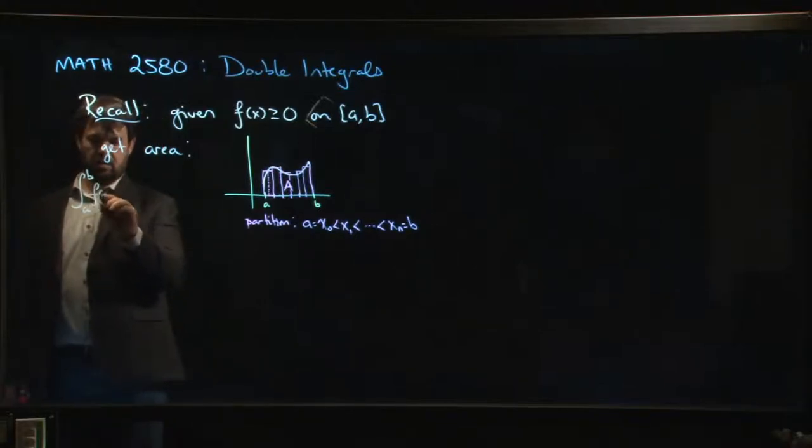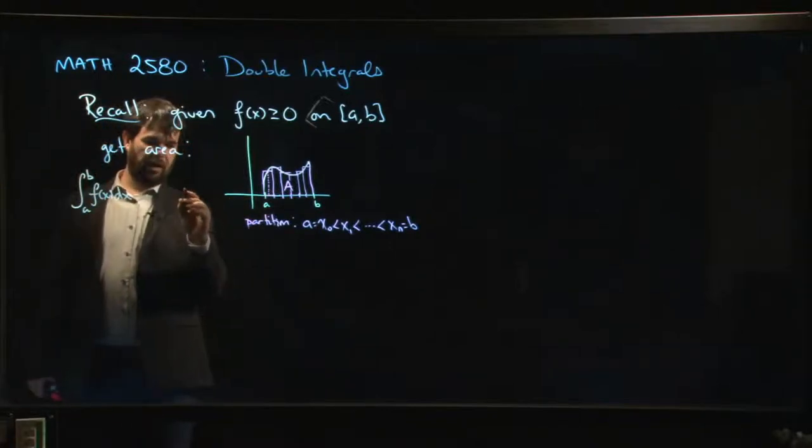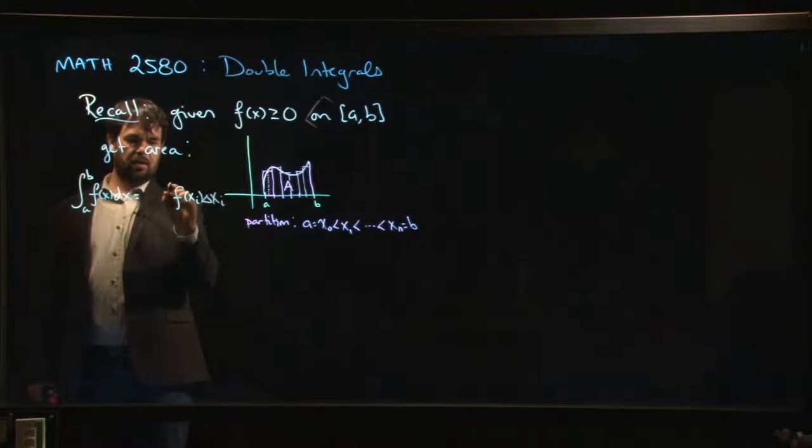So you put this all together, and you get the integral. So the integral from a to b of f(x) dx. And remember how this works: you add up all the areas of the rectangles. So any particular rectangle has a height given by f of xi with delta xi, and you add all those up.